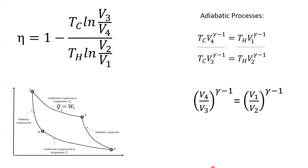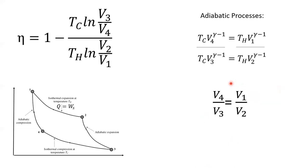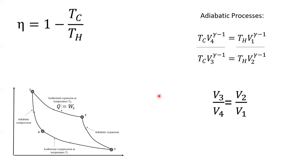We can enclose both sides in parentheses and exponentiate. If something to the (γ-1) equals something else to the (γ-1), then those somethings are equal — or raise both sides to the 1/(γ-1). The conclusion is V3/V4 = V2/V1, or equivalently V1/V2 = V4/V3. Reciprocating both sides, V2/V1 = V3/V4. This means we're taking the natural log of the same ratio in both QH and QC — the logs cancel. And there it is: efficiency = 1 - TC/TH. That's the expression from your book. These must be absolute temperatures — it doesn't work with Celsius. This is the Carnot efficiency, and it turns out to be the efficiency of any reversible engine.